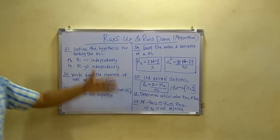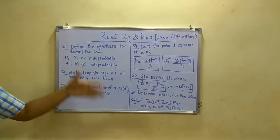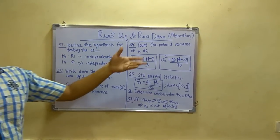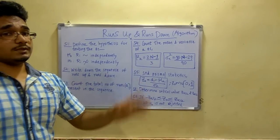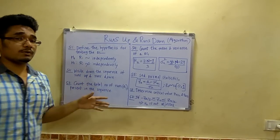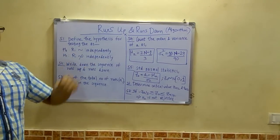First we have to define the hypothesis for testing the independence. Now remember this test for runs up and runs down is not used for testing the uniformity, it is used for testing the independence.